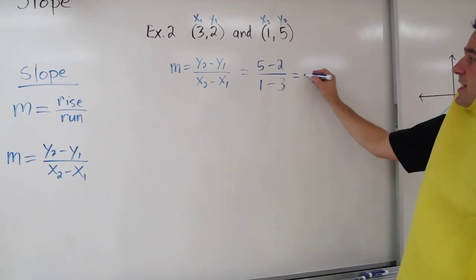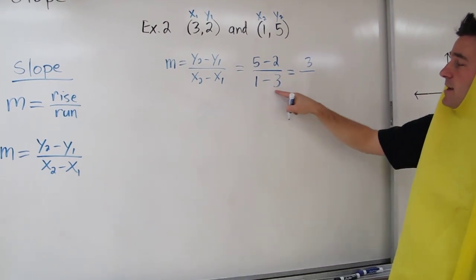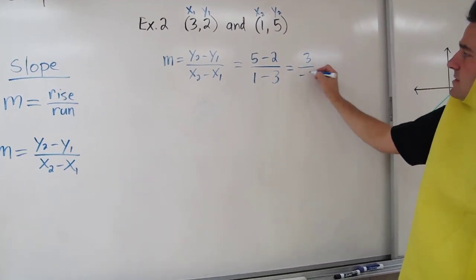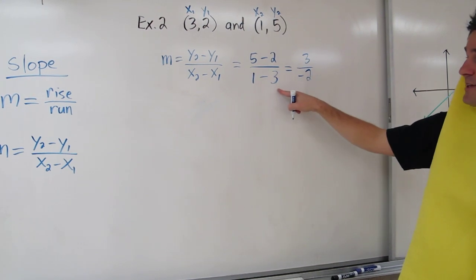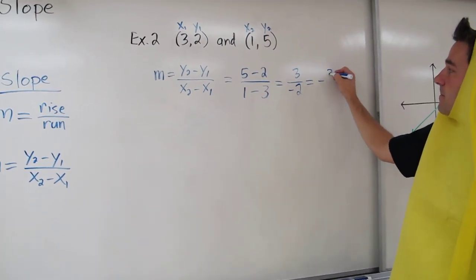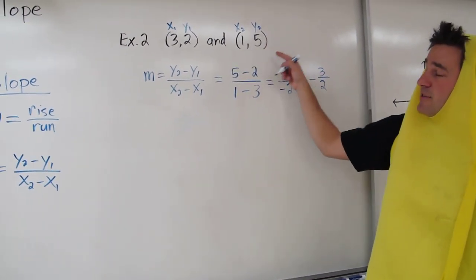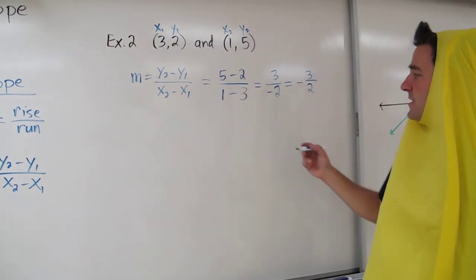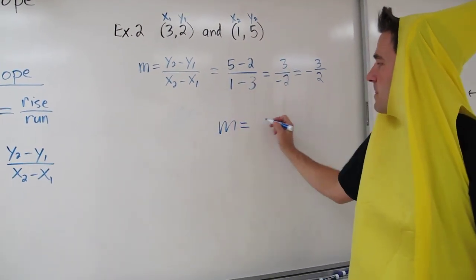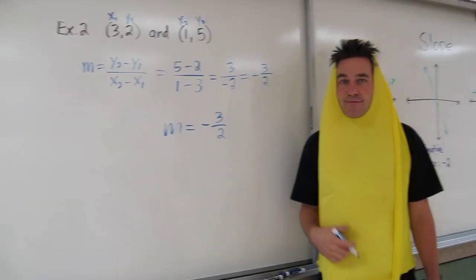Doing these simple calculations, 5 minus 2 is 3, and 1 minus 3 is negative 2. We end up with the fraction negative 3 halves. That means the slope of the line that connects these two points is negative 3 over 2. Good luck!